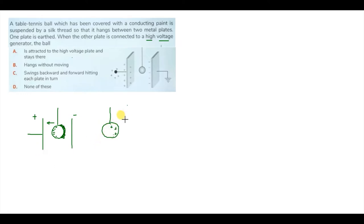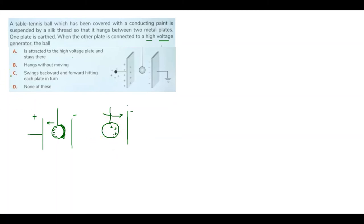These positive charges are now attracted by the negatively charged plate, so the ball shifts towards the negative plate, hits it, and neutralizes again completely. This process continues, and hence the answer is: the ball swings backward and forward, hitting each plate in turn.